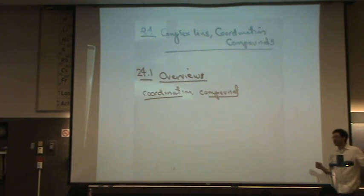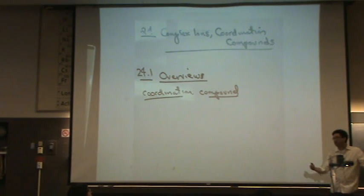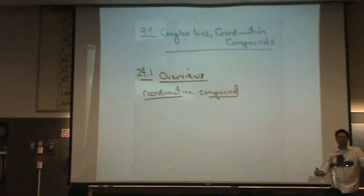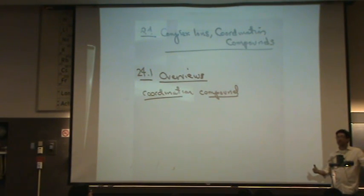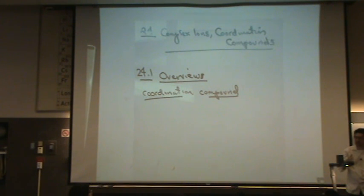Coordination compounds usually have color. They are usually paramagnetic. What's paramagnetic? Do you have an electron that is paired or unpaired? Unpaired. Does it respond to a magnetic field if it's paramagnetic? Yes. So it's magnetic, in a sense — it has magnetism, usually. And coordination compounds are formed from simpler compounds.